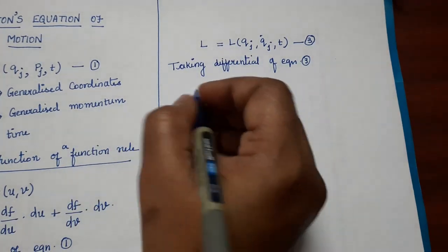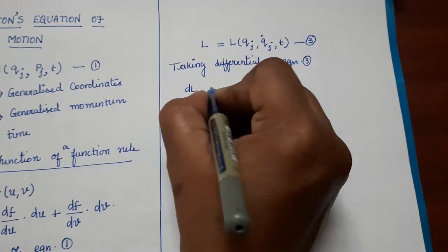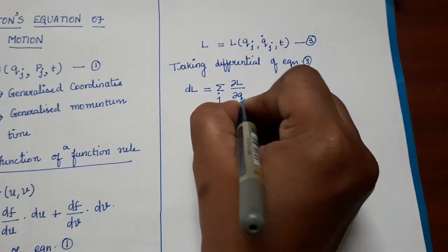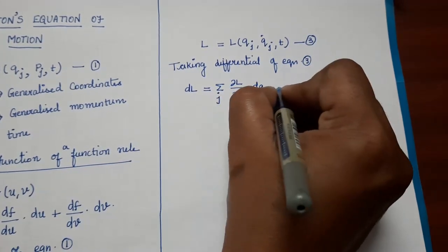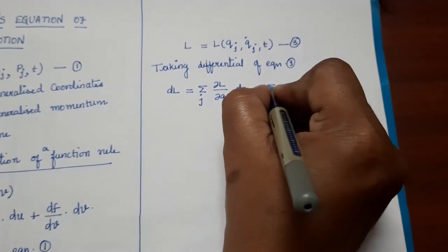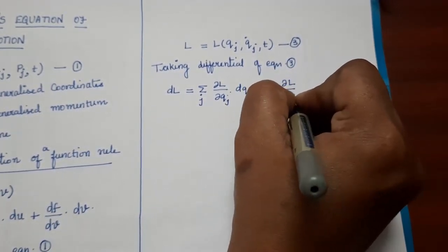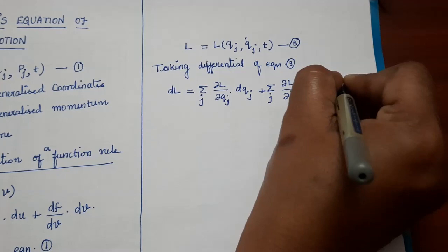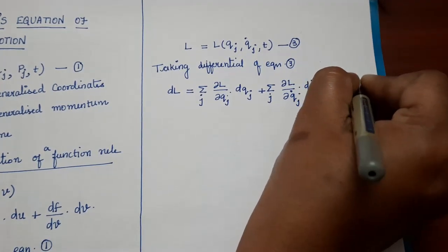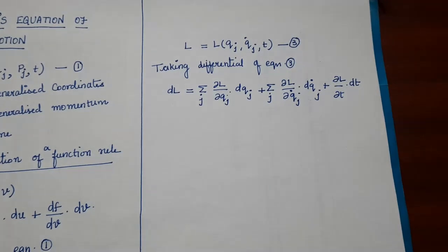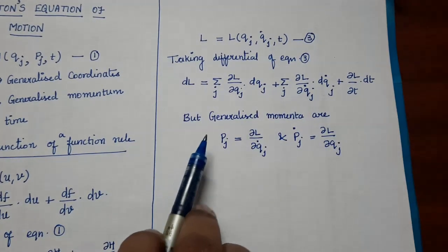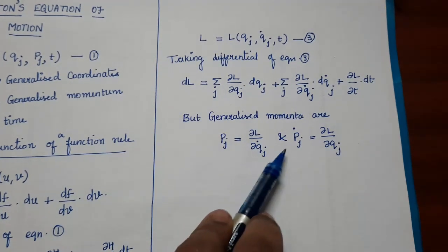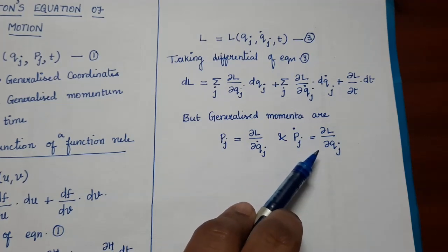Finding the differential of L using the chain rule, we get: dL = Σⱼ (∂L/∂qj) dqj + Σⱼ (∂L/∂qj_dot) dqj_dot + (∂L/∂t) dt. Now, the generalized momenta are given by pj = ∂L/∂qj_dot and pj_dot = ∂L/∂qj.